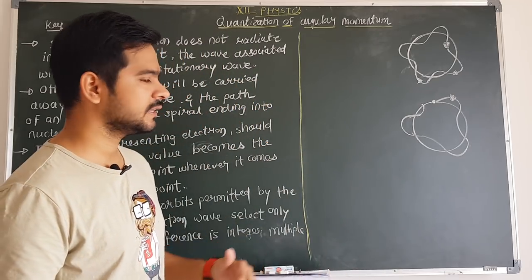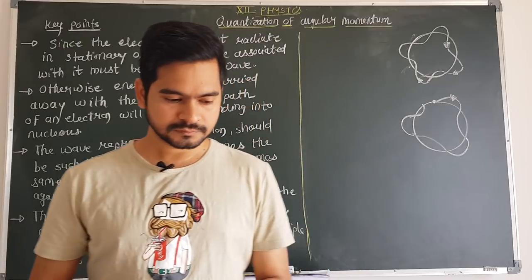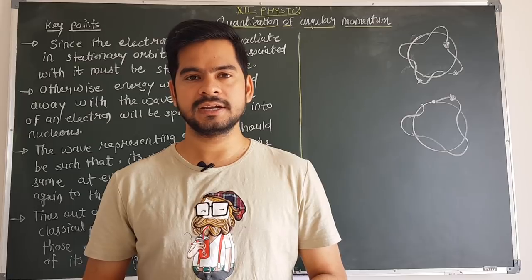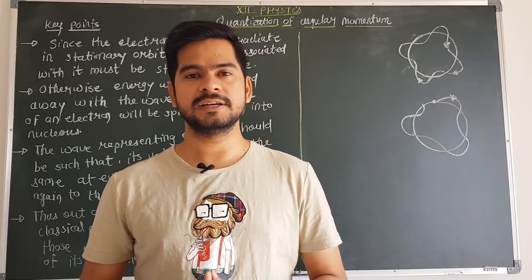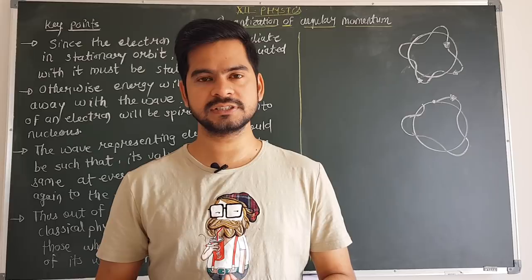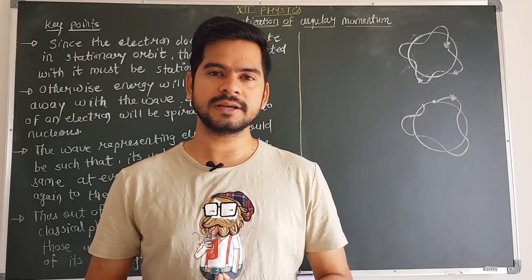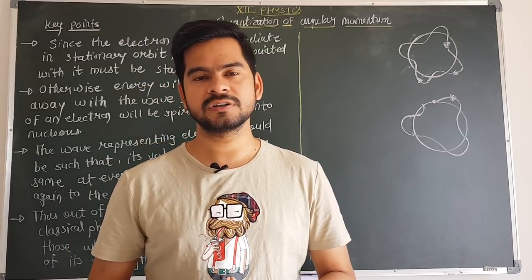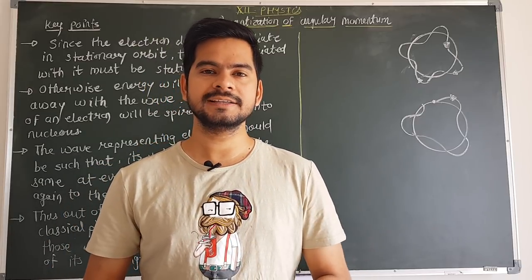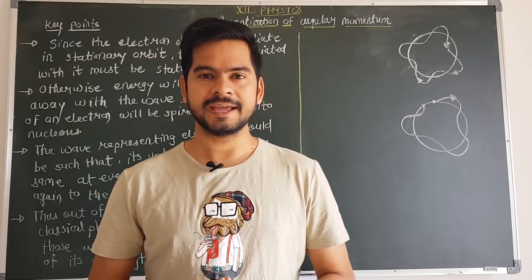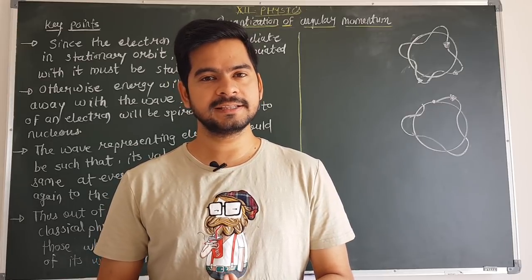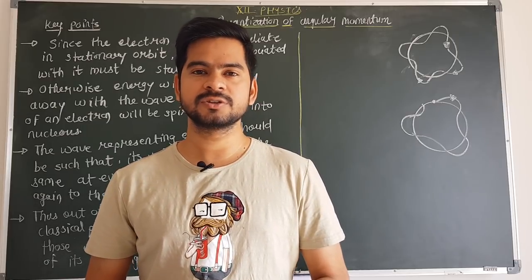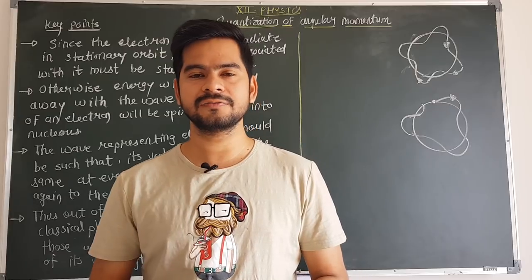Let's recall the previous video. We were discussing energy levels and calculated the formula for the energy of the electron: E = −Me⁴ / (8ε₀²n²h²). For the hydrogen atom, this simplifies to E = −13.6 / n² eV. By taking different values of quantum number n, we get different energy levels.